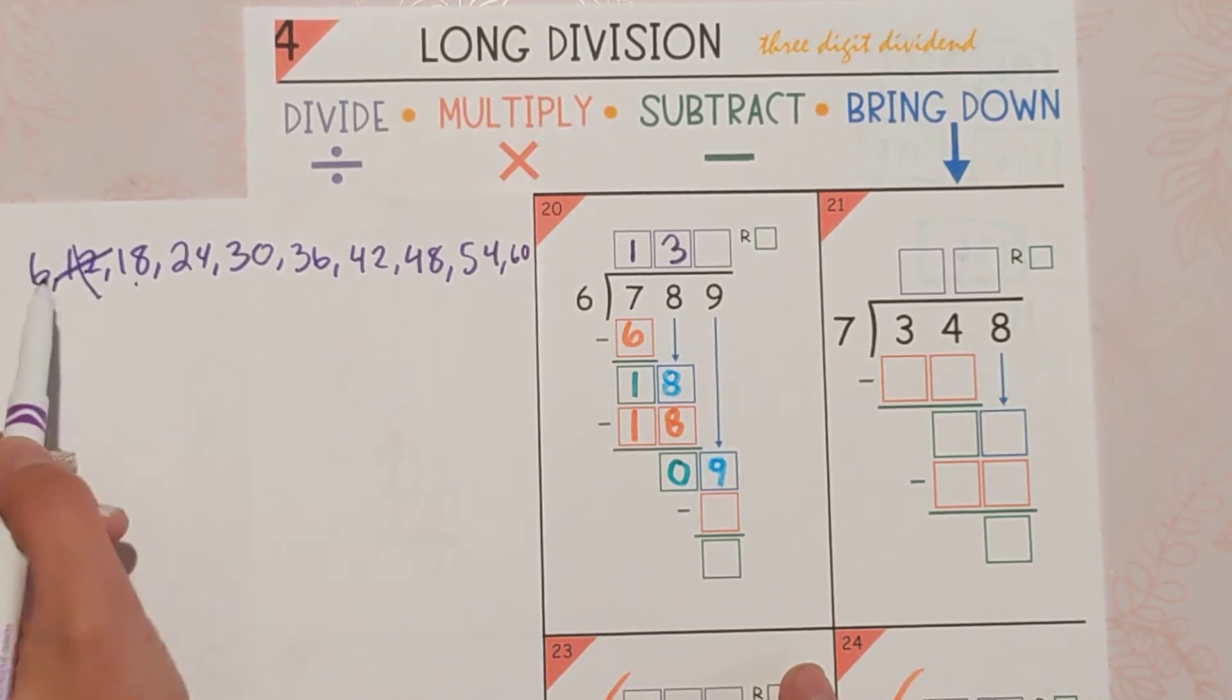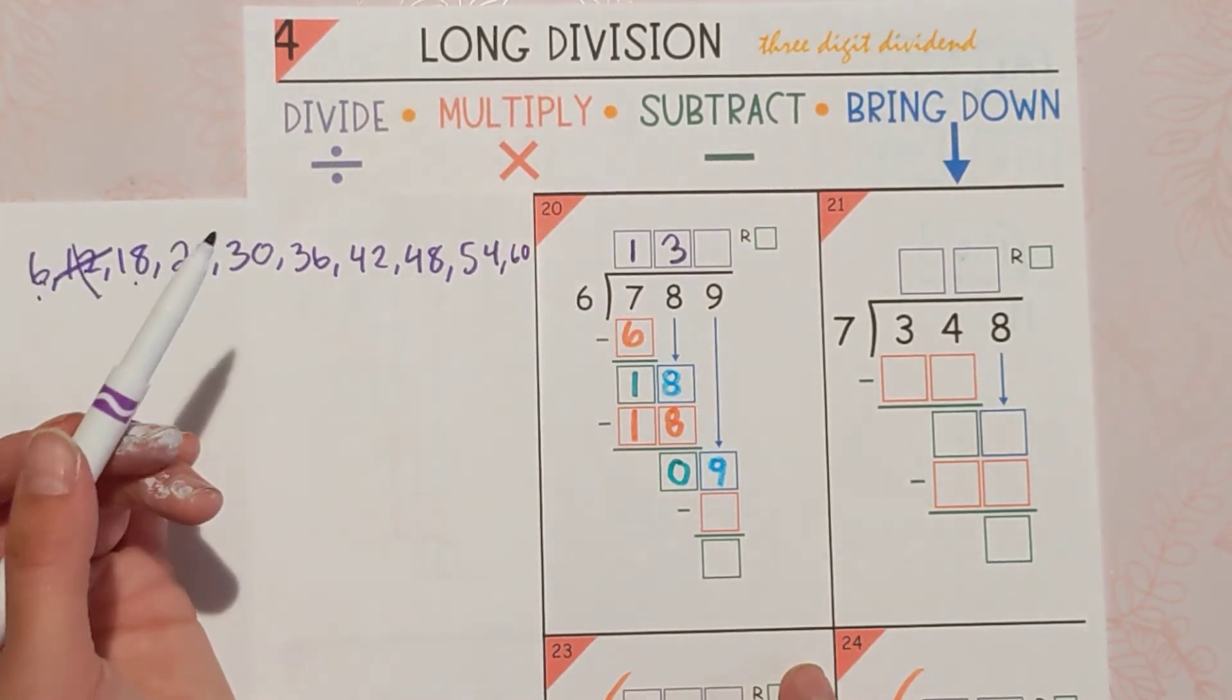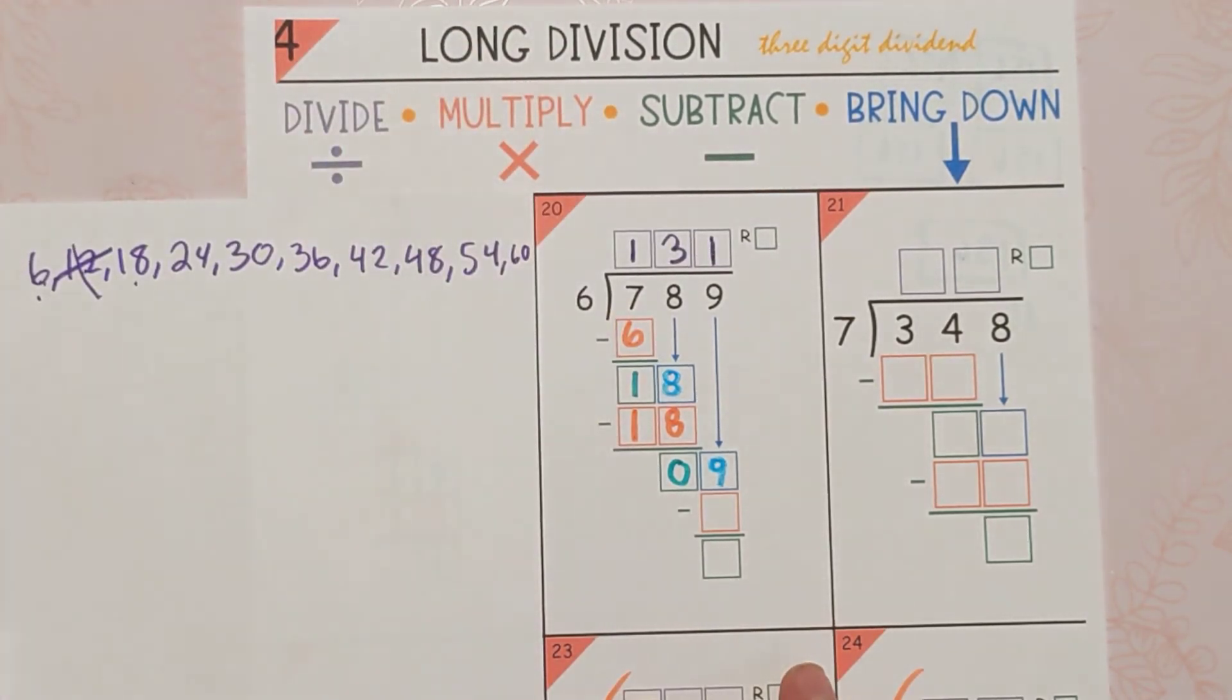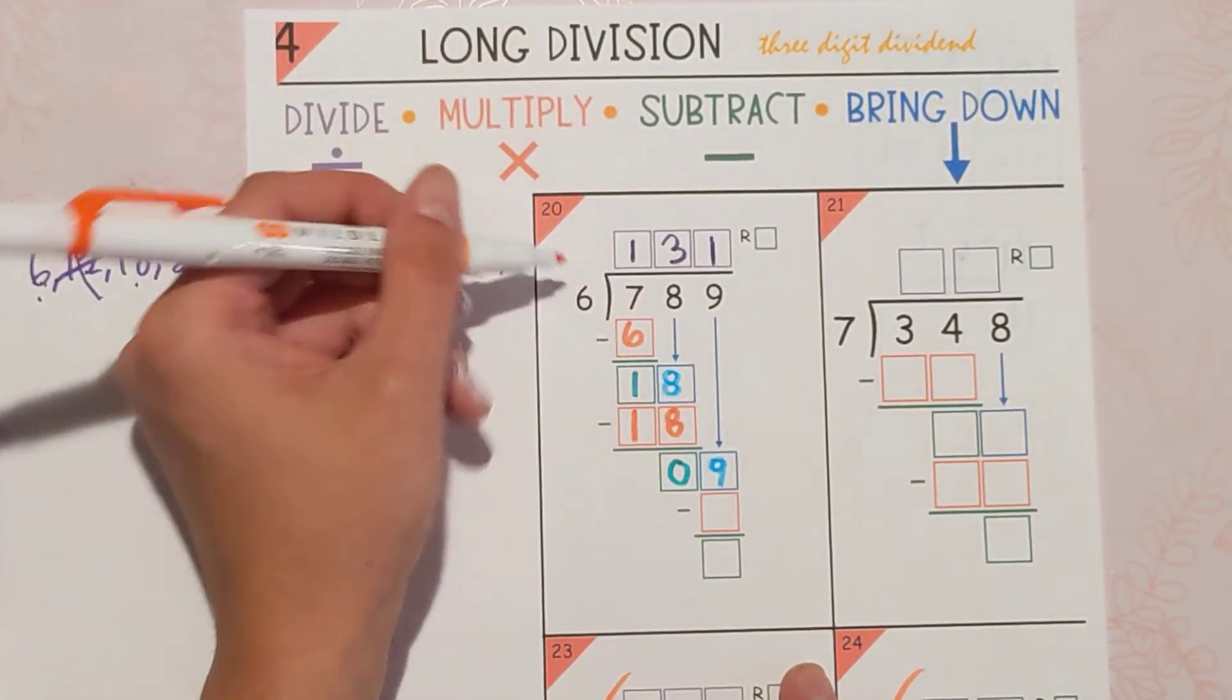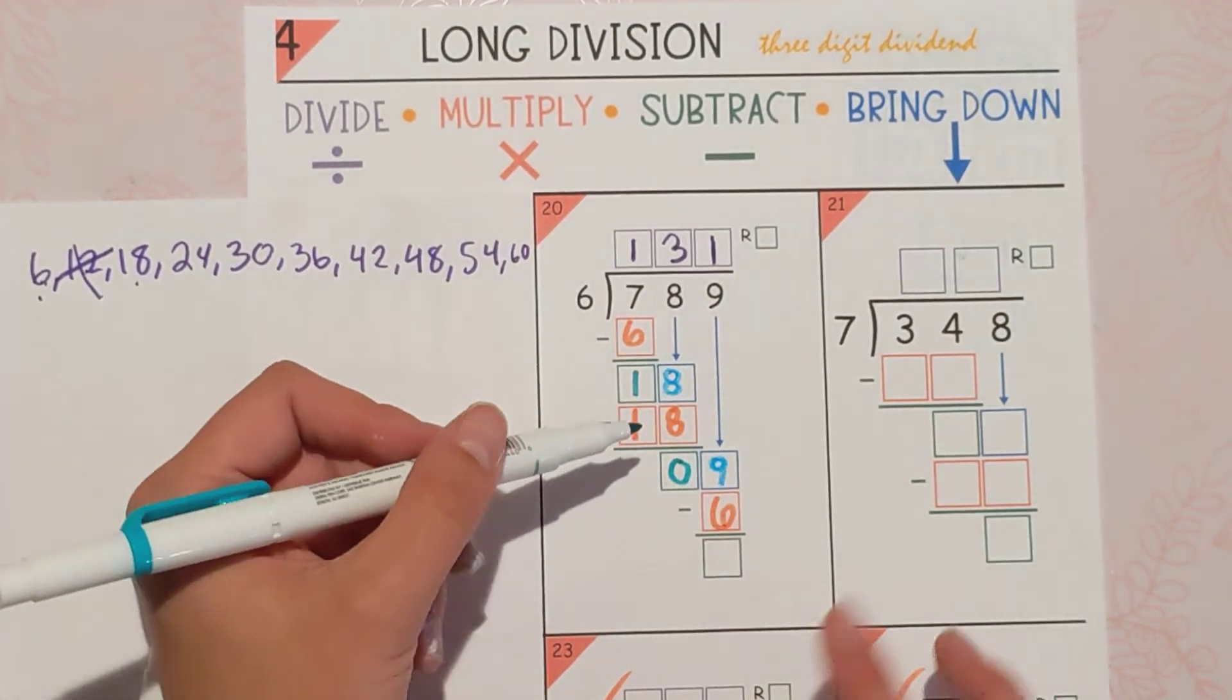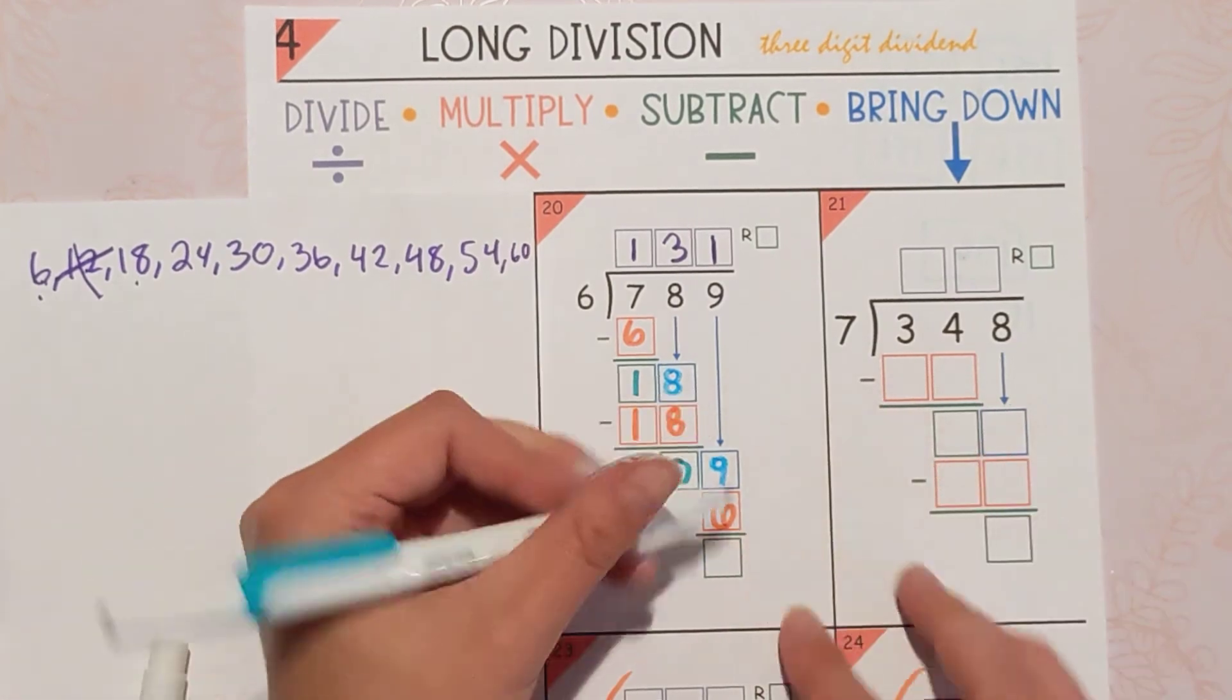Just one time. Where does the 1 go? It goes on top. Think about what you're going to do next. 1 times 6 is 6. Think about the next step. 9 minus 6 is 3.